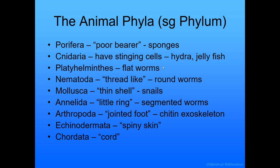Mollusca means thin shell — those are the snails. Annelida means little rings — those are the segmented worms. Arthropoda means jointed foot — those are the ones with the chitin exoskeleton. Echinodermata are the ones with the spiny skin — your starfish and that kind of thing. And then the chordata — those are the ones with the spinal cords.